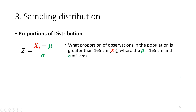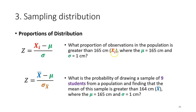Looking at the difference between the two types of questions: for the observation distribution the question asks about individual observations, while for the sampling distribution we ask about a sample. The sample size is also mentioned because we need it for our calculation. When we use the z-test it means we know the population parameter, so the population parameter will be given in the question.